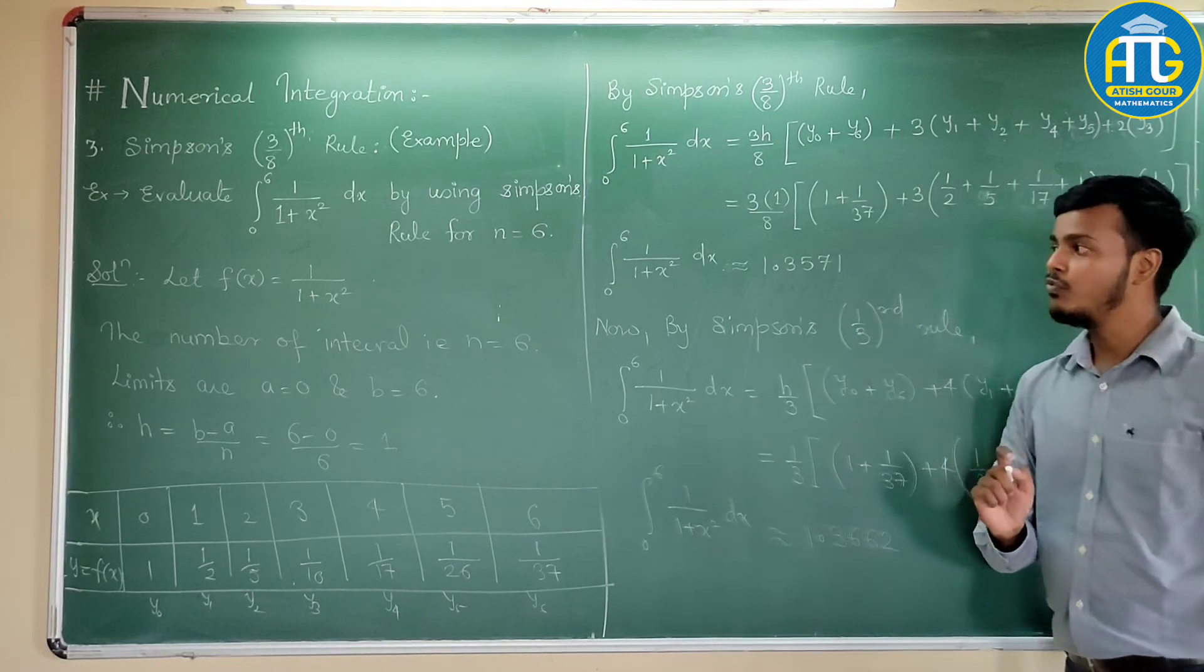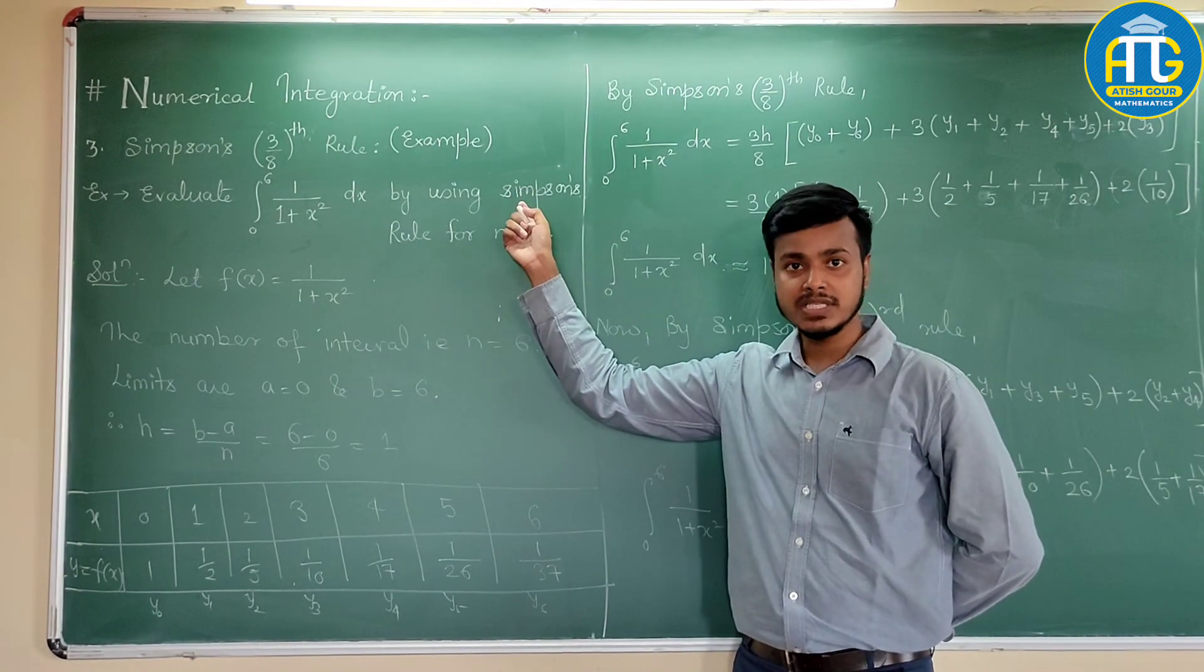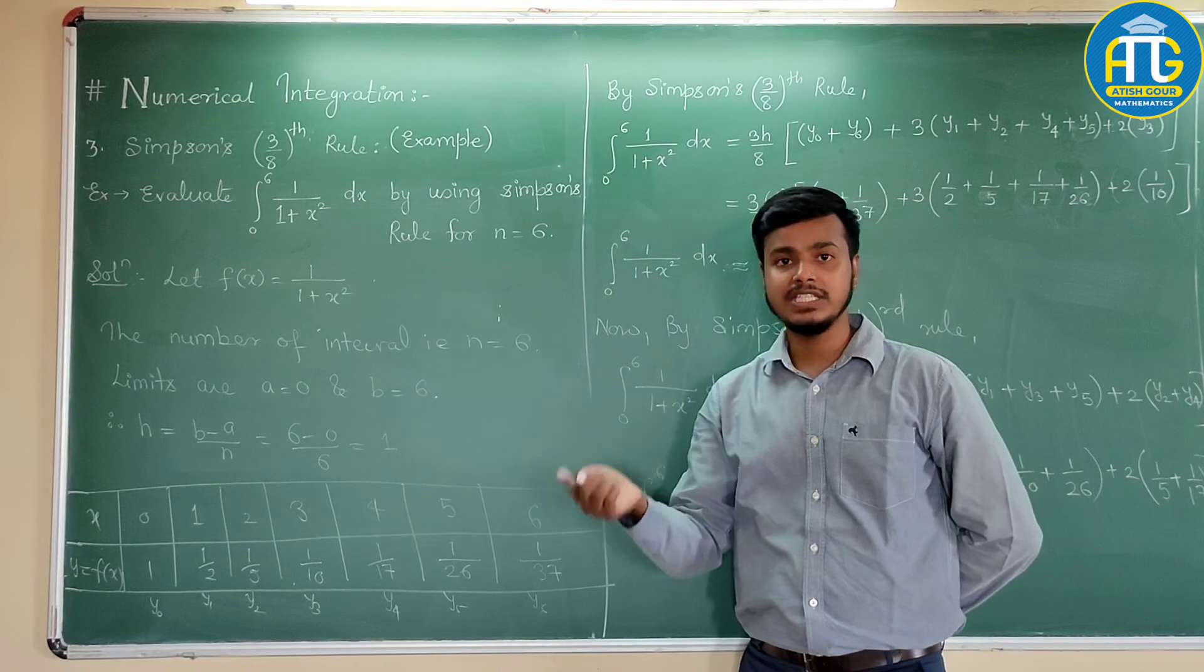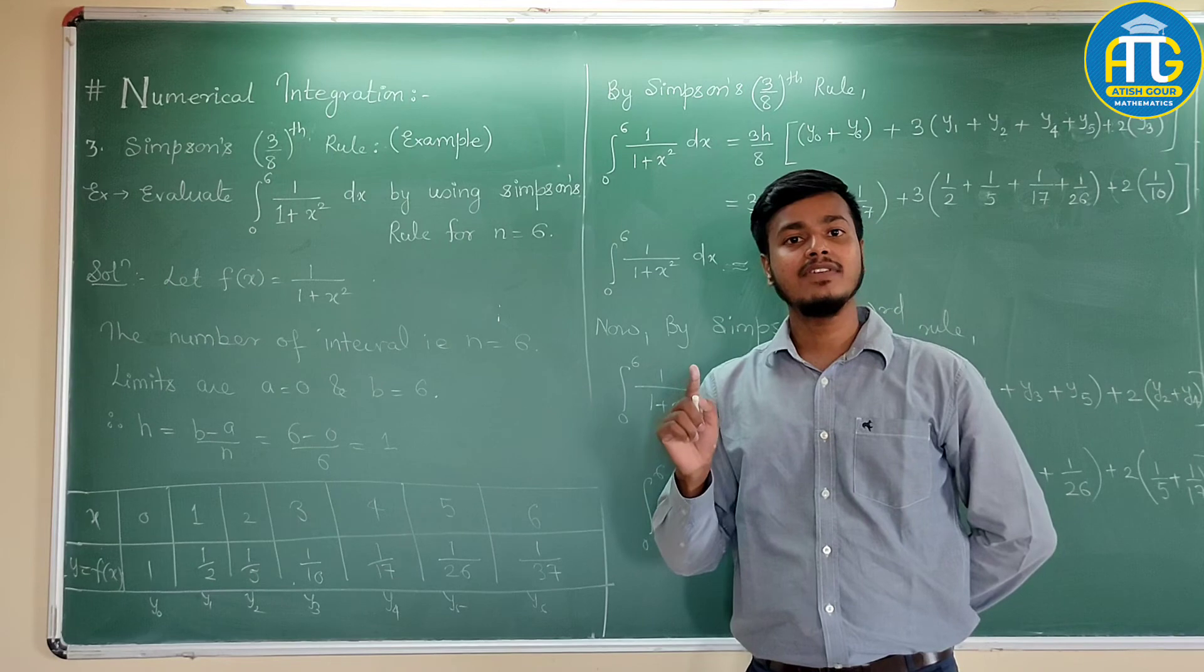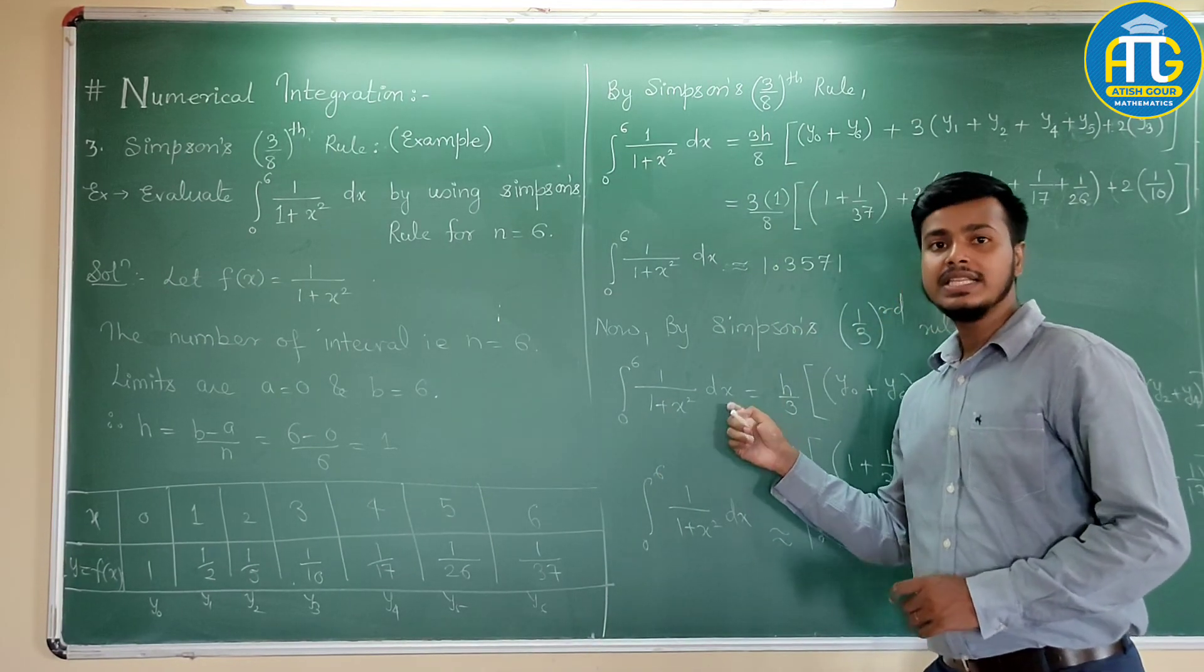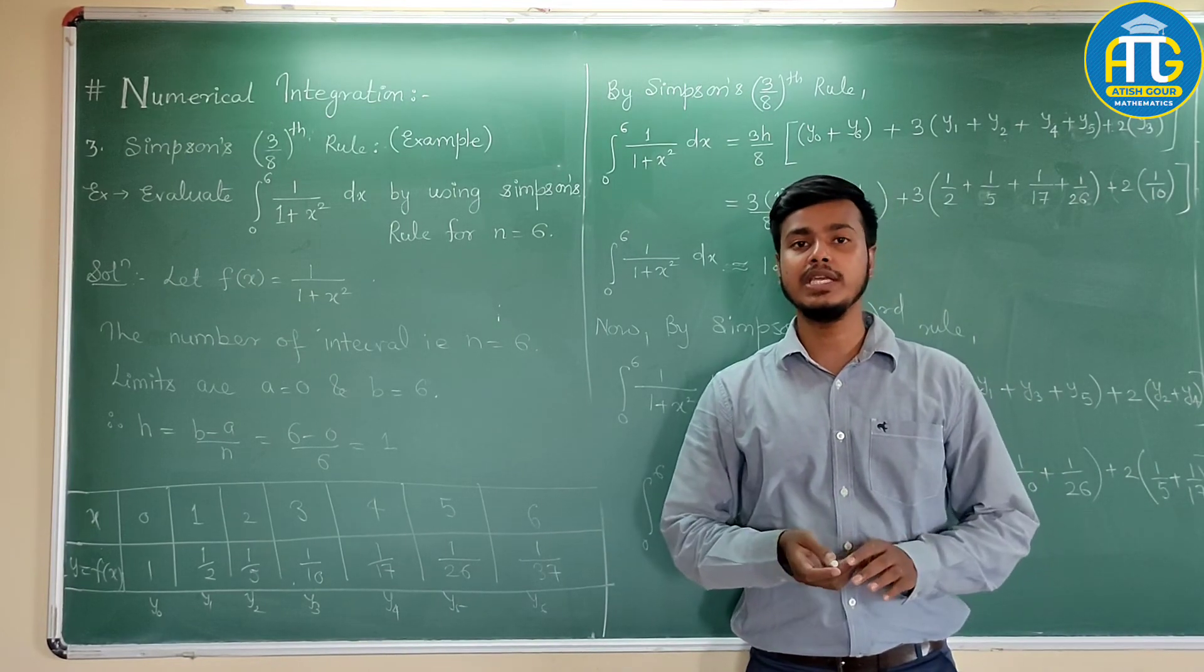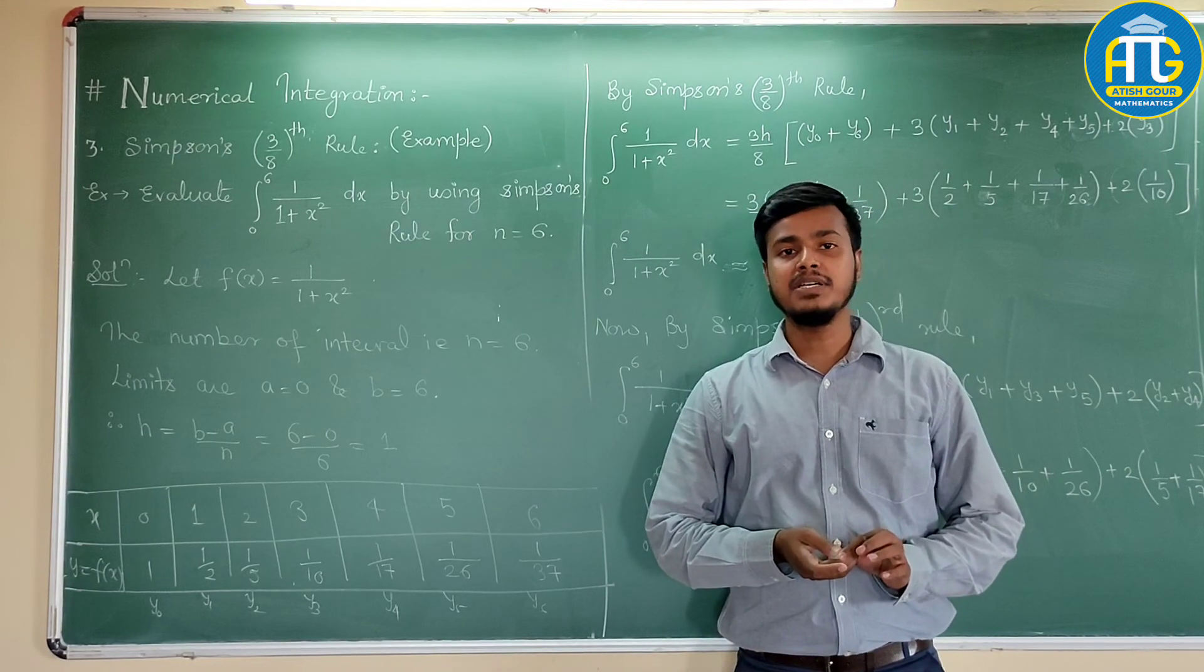So, next time, whenever you have a problem, that evaluate any integral with the help of Simpson's rule. And if you have the value of n to be 6 or a multiple of 3, which is also an even number. So, I will recommend you to always use Simpson's one-third rule. This will give you far better answer than Simpson's 3/8 rule. That is the concluding remark for this numerical technique.